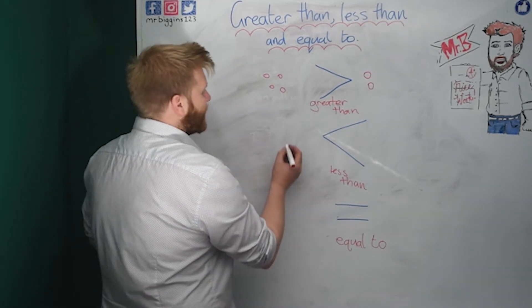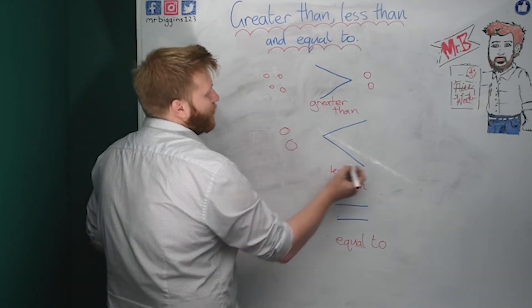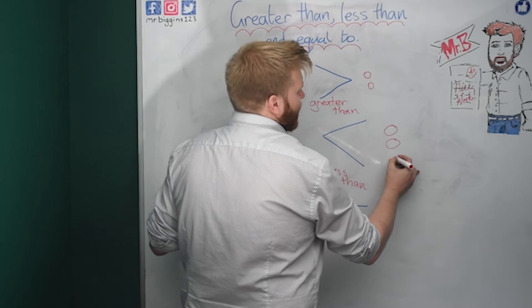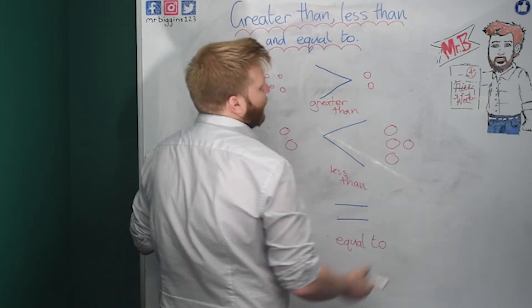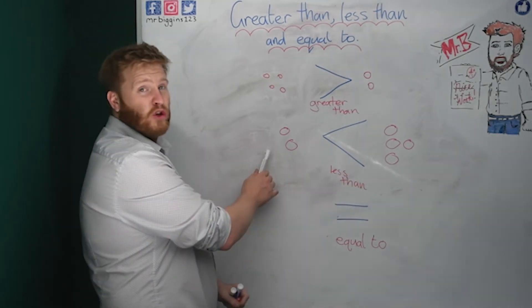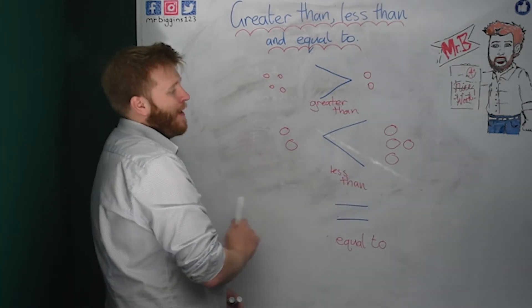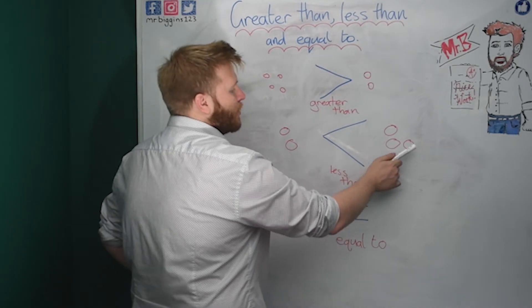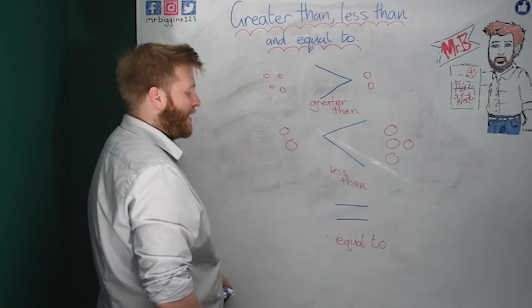And let's move on to less than. We can swap our counters around. So if I had two on this side and four on that side, I'm saying this group is less than that group. Because I've got two in this group, one, two. And I've got four in this group: one, two, three, four.